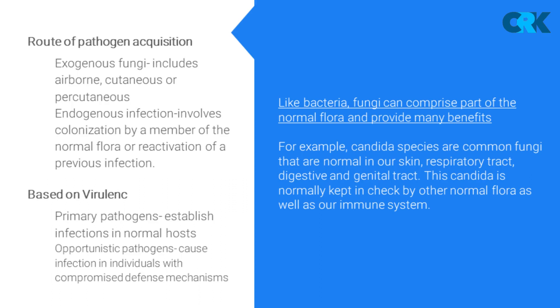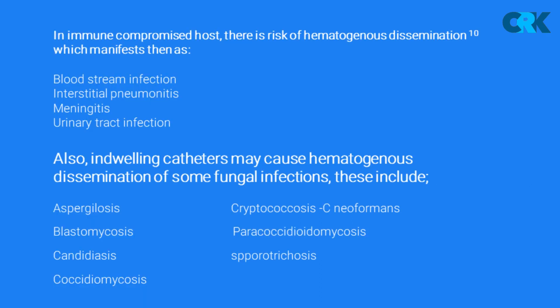Fungal infections can also be classified by route of pathogen acquisition or based on virulence. In an immunocompromised host, there is risk of hematogenous dissemination, which manifests as bloodstream infection, interstitial pneumonitis, meningitis, or urinary tract infection. Indwelling catheters, such as a central line, may also lead to hematogenous dissemination.